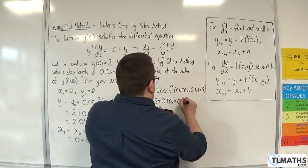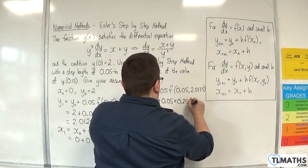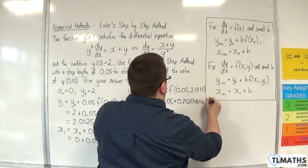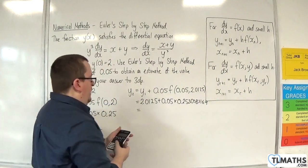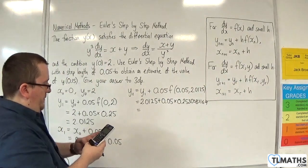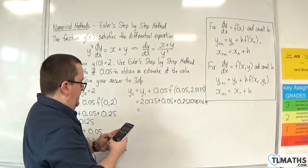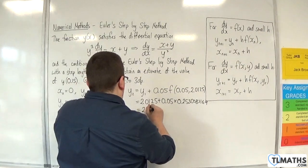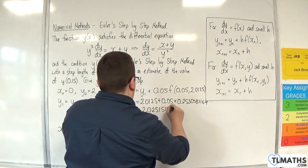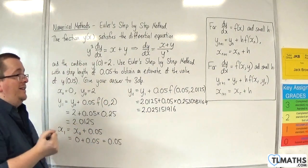So that's 0.253, 0.383169. We're going to times that by 0.05, add on 2.0125, and we get 2.025151916. So that's y₂.